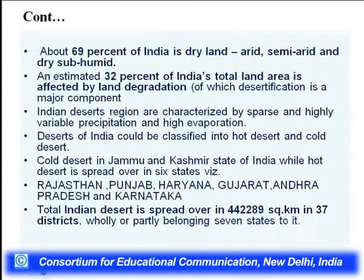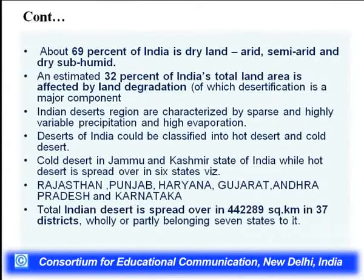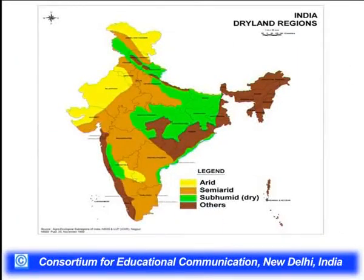India's desert can be classified into hot and cold deserts. The hot desert regions span Rajasthan, Punjab, Haryana, Gujarat, Andhra Pradesh, and Karnataka — covering almost 37 districts. From the map you can see the total arid, semi-arid, subhumid, and other zones. Moving from west to east across India, we transition from arid in the west through semi-arid to subhumid and other types in the east.